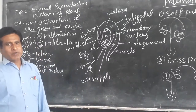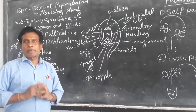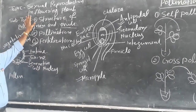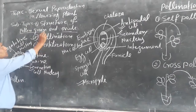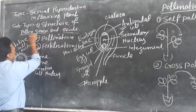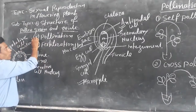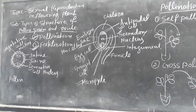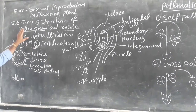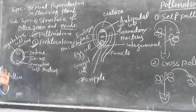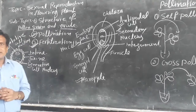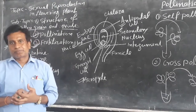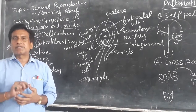Today I am going to discuss some subtopics under the theory of sexual reproduction in flowering plants. The subtopics are: structure of pollen grain and ovules, pollination, and fertilization. First of all, I am going to discuss the structure of pollen grain. As we know, pollen grain is a male reproductive unit and it is produced in the anther. Anther is the male reproductive part of the flower.